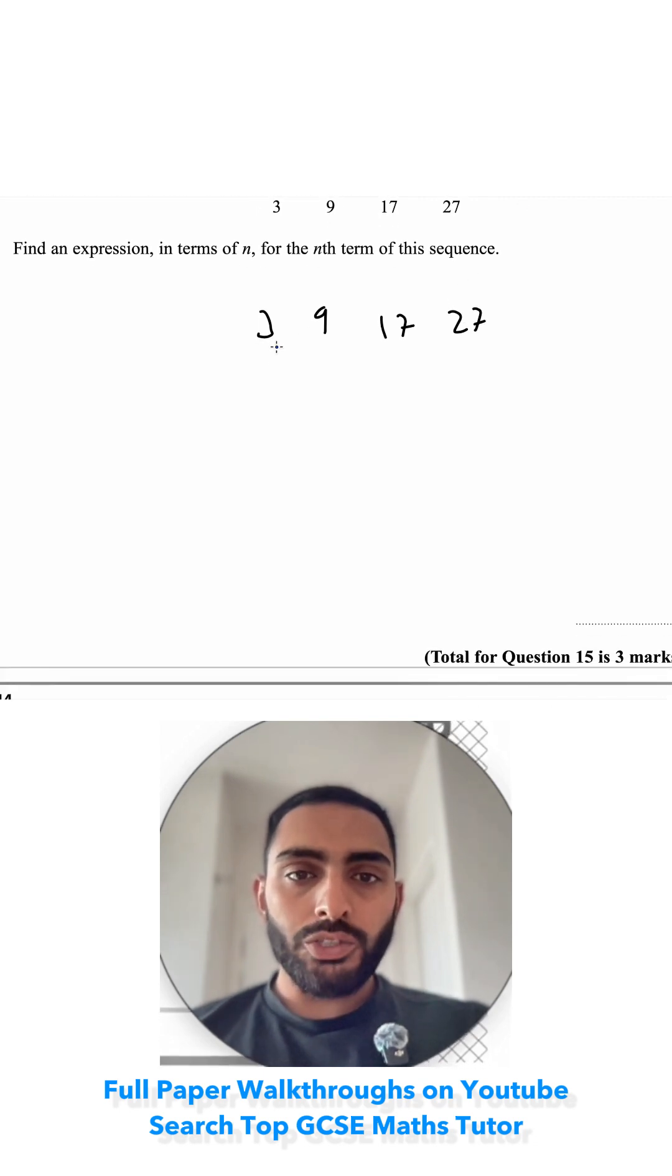The first thing that I'm going to do is look for my second difference. So what is it going up each time first? It's going up by 6 and then by 8 and then by 10. My second difference is the difference between these. So here it's always going up in 2s. And because this number is 2, I just divide it by 2. So 2 divided by 2 is 1. And this is telling me the number before my n squared. So it's just going to be 1n squared or my square numbers.